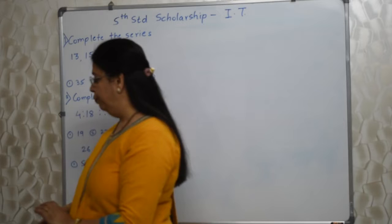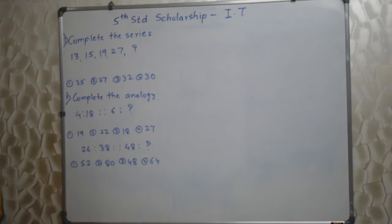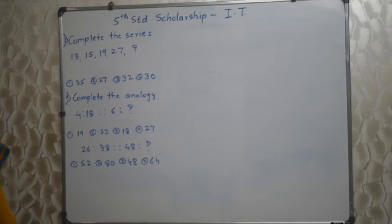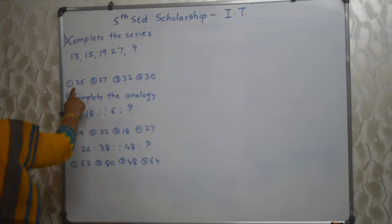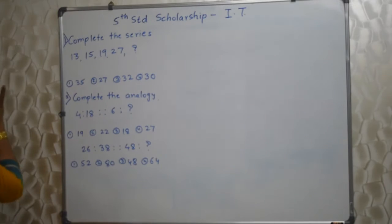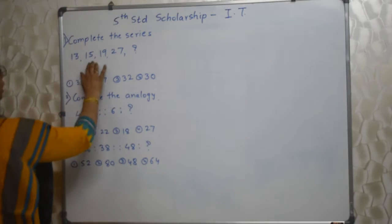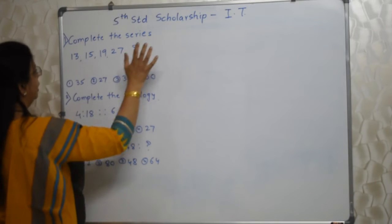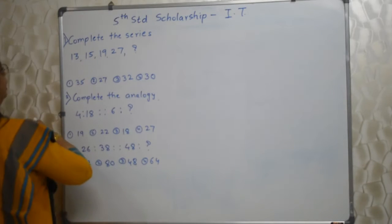I have written few sums on the board. The first one is: complete the series. They have given some numbers — 13, 15, 19, 27 — and a question mark. We need to find out which number will come in place of the question mark. First observe the numbers. Numbers are gradually, slowly increasing. So find out the difference.